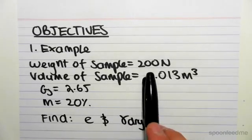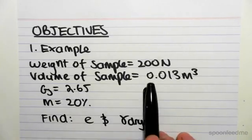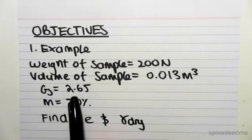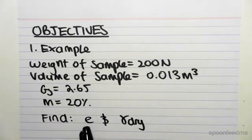We've been given the weight of a sample is 200N, the volume of that sample is 0.013m³, its specific gravity Gs is 2.65, and the moisture content is 20%. We're asked to find e, the void ratio, and gamma dry, the dry unit weight.